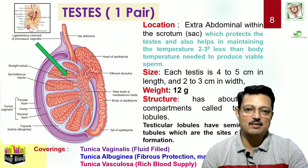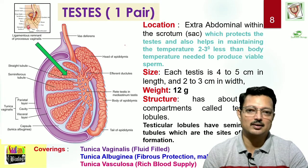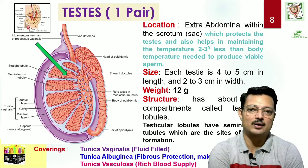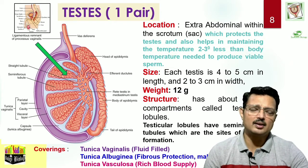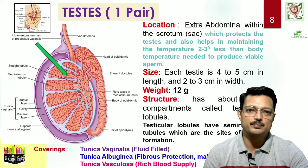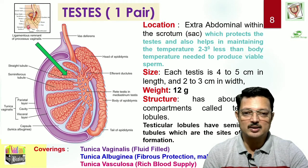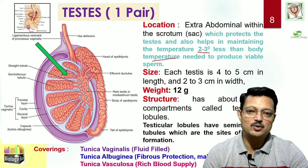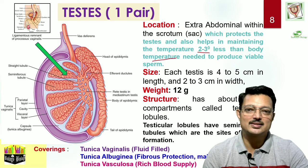The testes are extra-abdominal because they are called spermaries — the production of sperm takes place in the testes. This process requires a temperature of around 35 to 35.5 degrees Celsius, which is not possible inside the body. To provide a temperature 2 to 3 degrees less than body temperature for production of viable sperm, these structures hang outside in a structure called the scrotum.